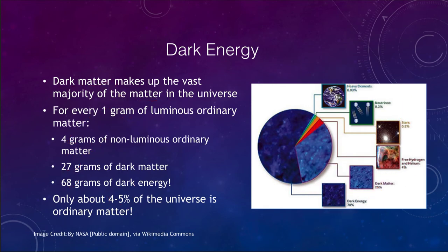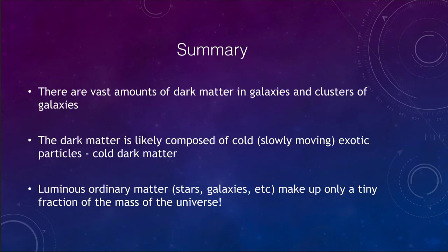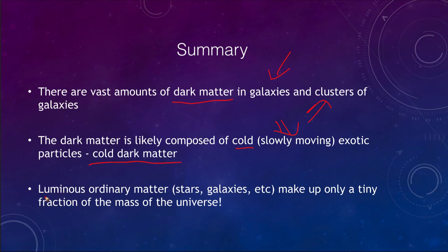To summarize this lesson: we know that there are vast amounts of dark matter in galaxies and in clusters of galaxies. The dark matter is likely composed of cold, meaning slowly moving, exotic particles — what we call cold dark matter. And luminous ordinary matter — stars, galaxies, planets — makes up only a tiny fraction of the mass of the universe. That concludes our lecture on dark matter. We'll be back again next time for another topic in astronomy. Have a great day, everyone, and I will see you in class.